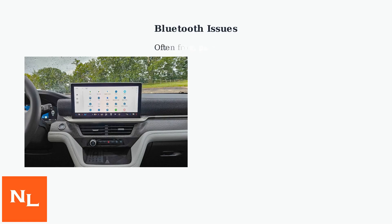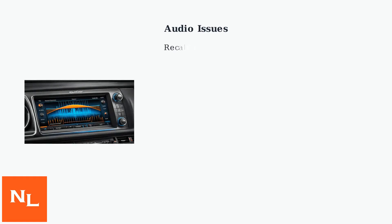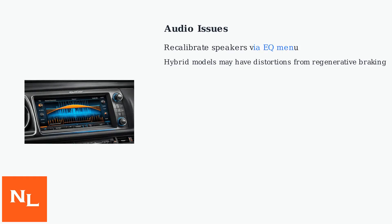Bluetooth and audio problems in the 2025 Ford Explorer often stem from pairing conflicts or signal interference. To fix these issues, a reset can help clear faulty connections. Advanced troubleshooting involves forgetting devices and re-pairing them. For audio problems, try recalibrating speakers via the EQ menu. Note that hybrid models may experience audio distortions from regenerative braking.